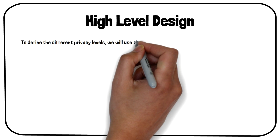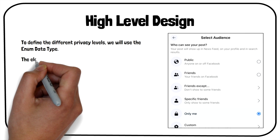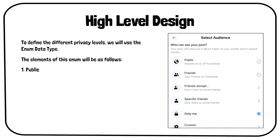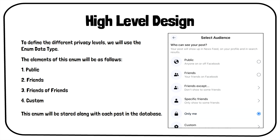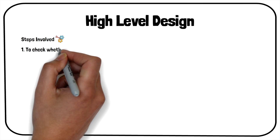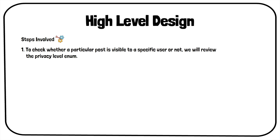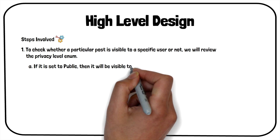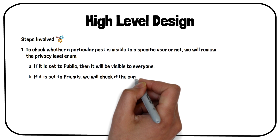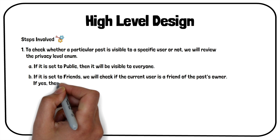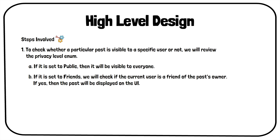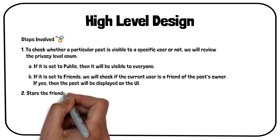To define different privacy levels, we will use the enum data type. The elements of this enum will be public, friends, friends of friends, and custom. This enum will be stored along with each post in the database. To check whether a particular post is visible to a specific user, we will review the privacy level enum. If set to public, it will be visible to everyone. If set to friends, we will check if the current user is a friend of the post's owner.